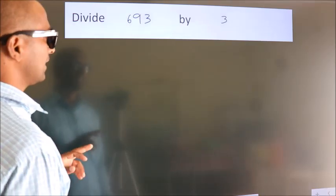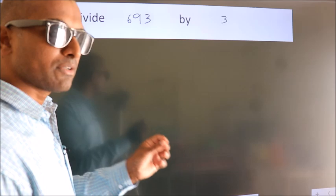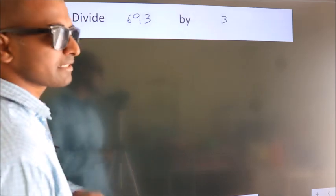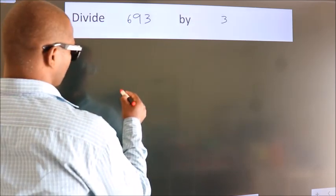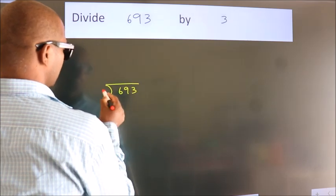Divide 693 by 3. To do this division, we should frame it in this way. 693 here, 3 here.